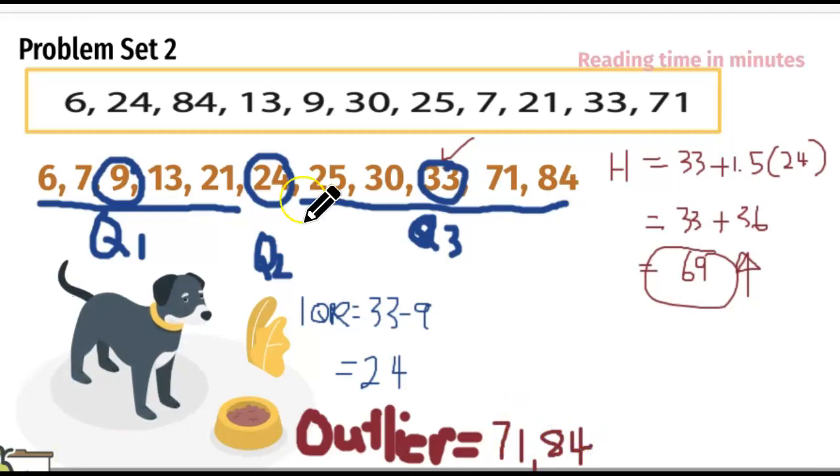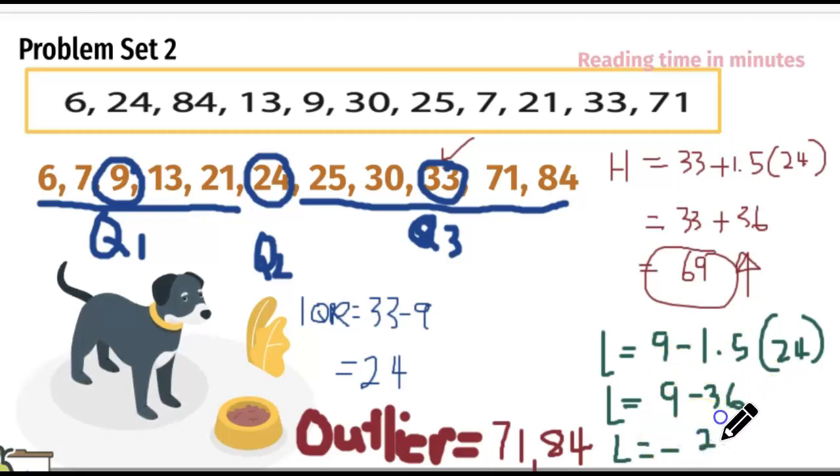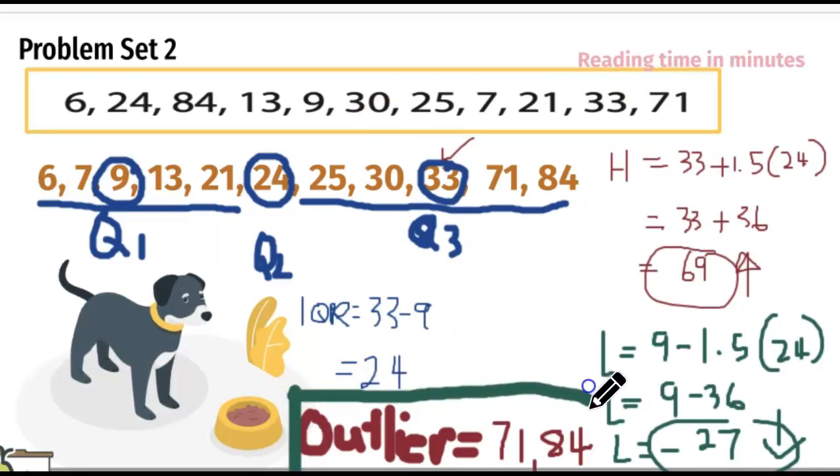Let's check for the lower side. For the lower side, lower equals we're going to need Q1, so 9 minus 1.5 times the outlier, which is 24. The lower is 9 minus 36, so the lower boundary is 9 minus 36, which is negative 27. Anything lower than negative 27 is our outlier. Our higher boundary is 69. If there's higher than that, it's our outlier, and we see there is 71 and 84. For the lower one, anything that is lower than negative 27 is our outlier. There's no lower outlier in the lower boundaries, so we could say that our outliers for the set of data are 71 and 84.